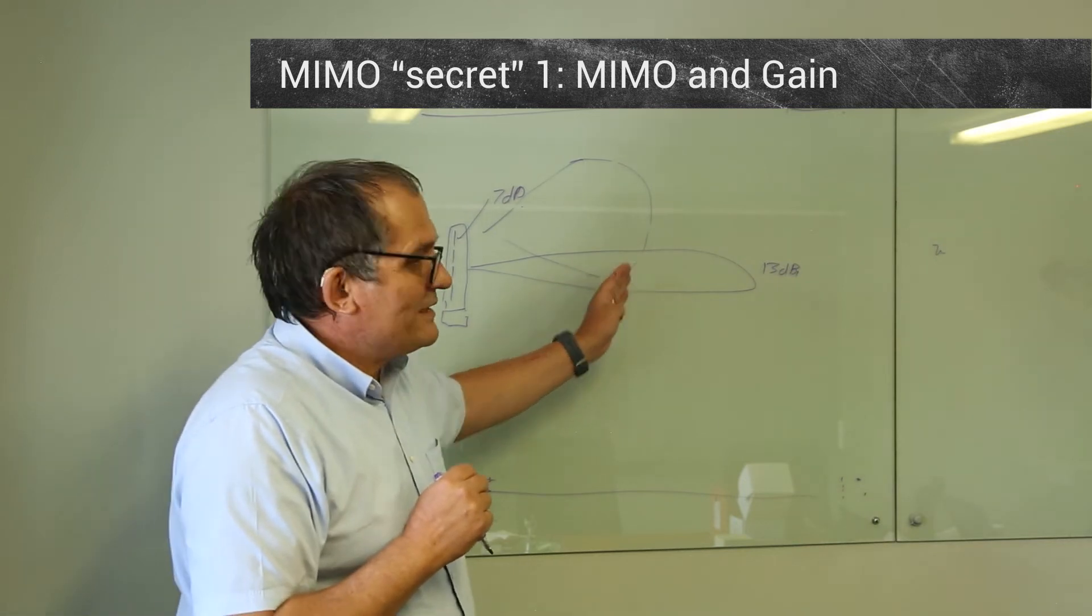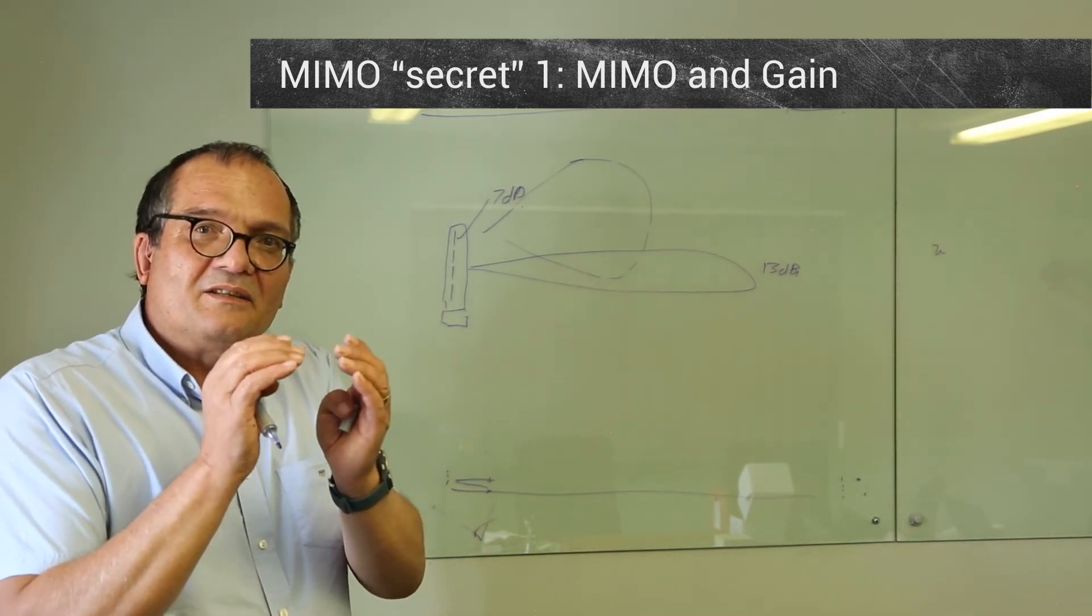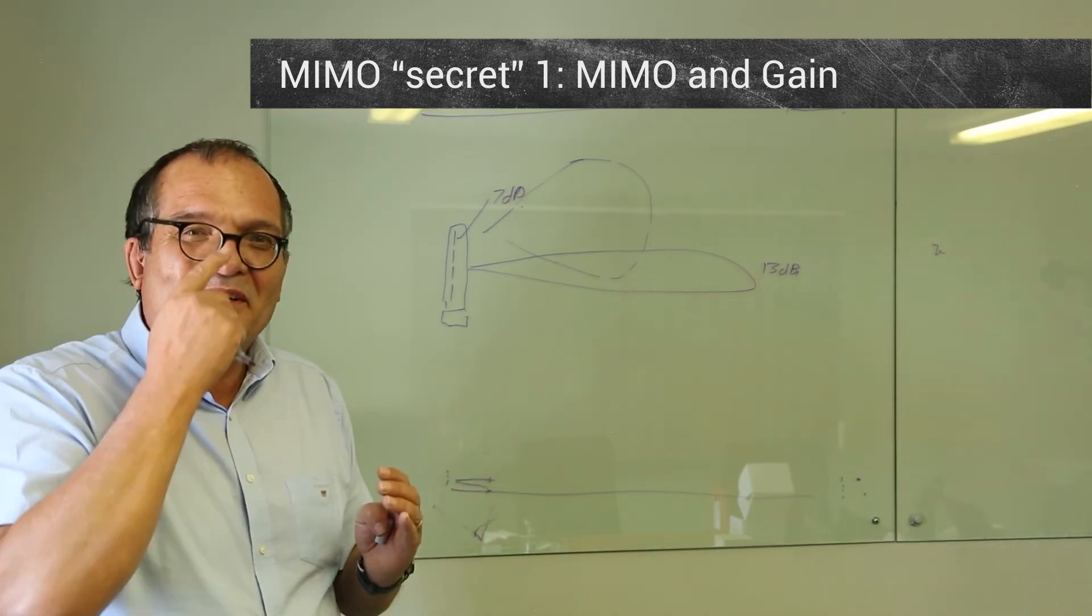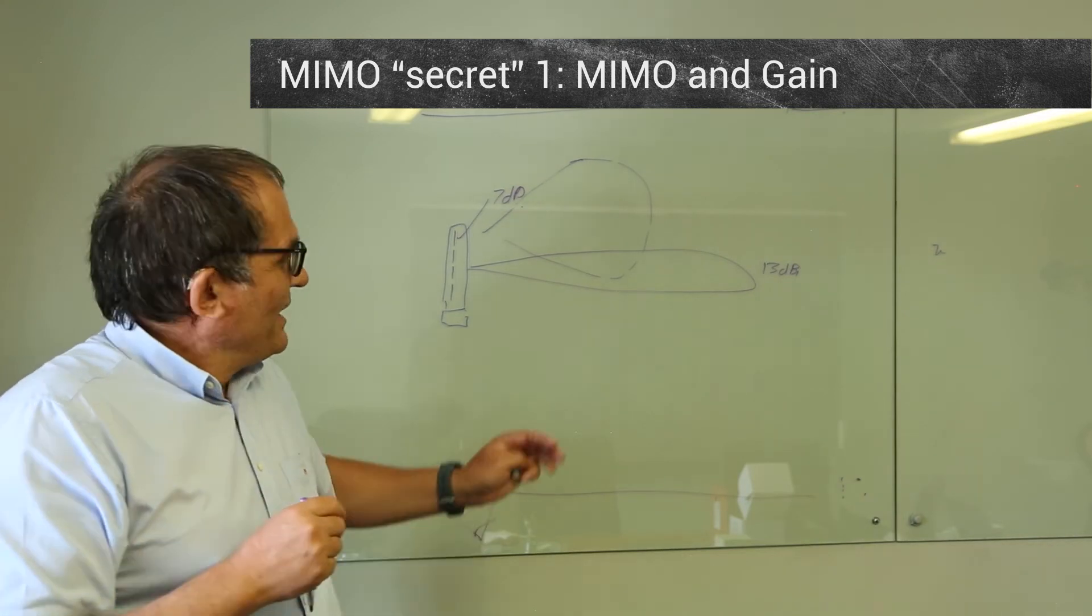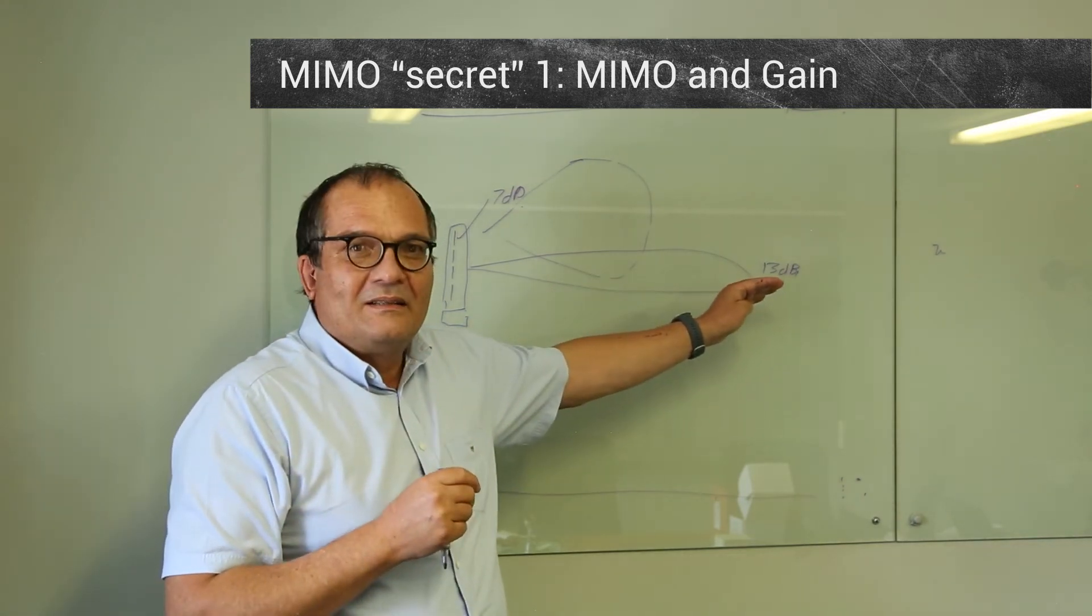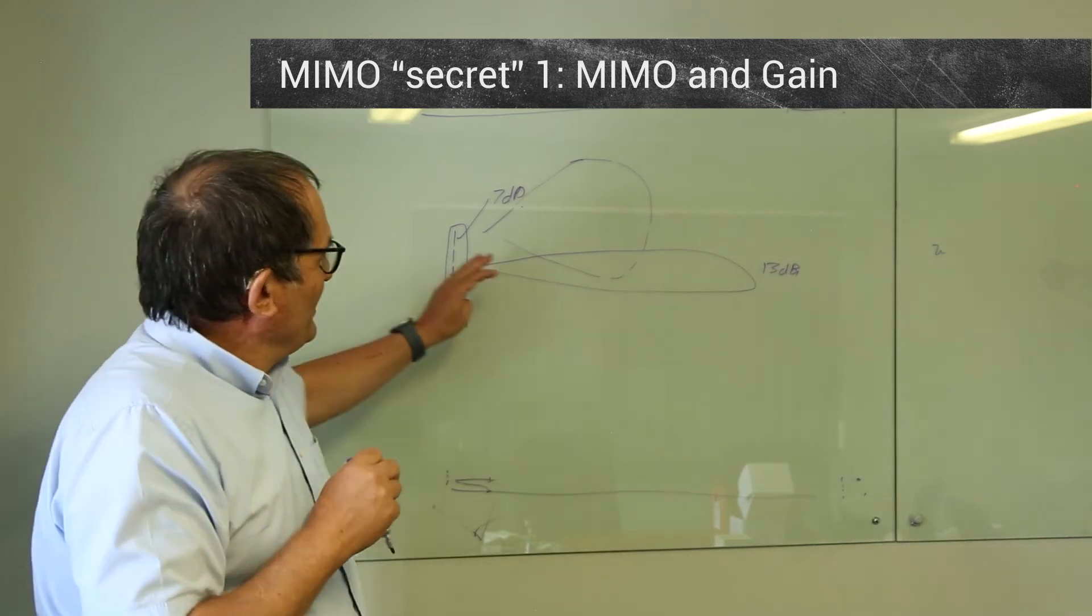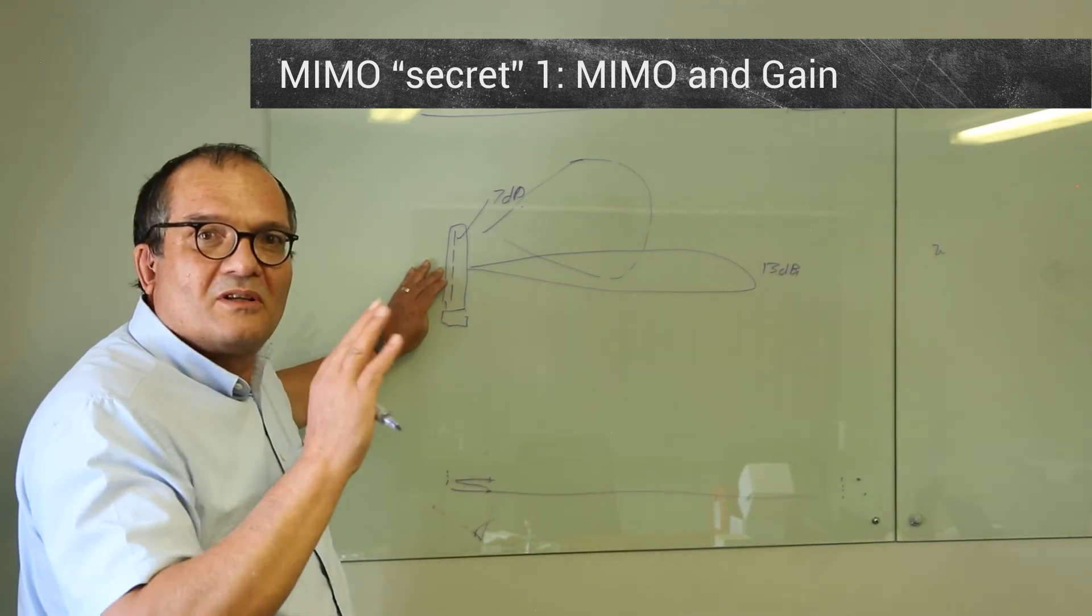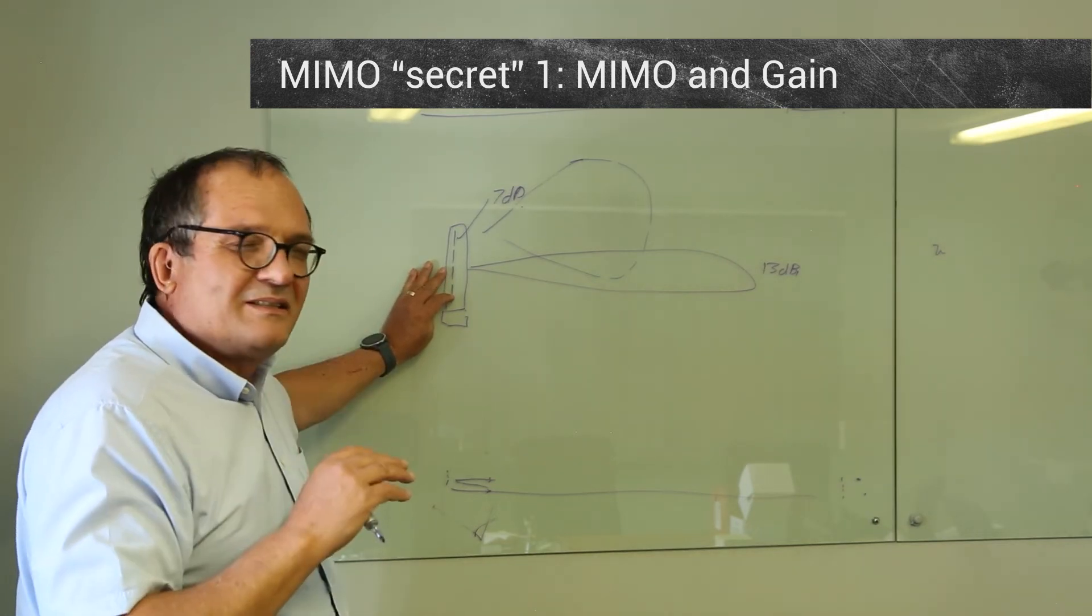And if you still have reach, what will happen is that you will go from a very simple modulation technique to a more complex one. Another video explains that, but you stuff more bits in per symbol and it will increase your data rate fairly dramatically, typically also often by a factor of four. So you still get a massive gain although you're not using MIMO.